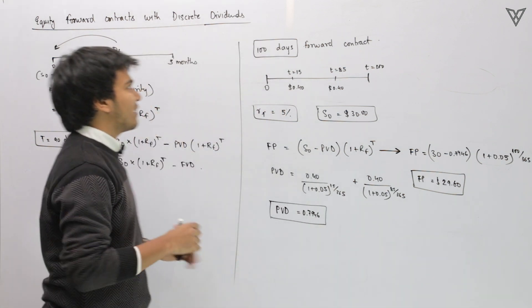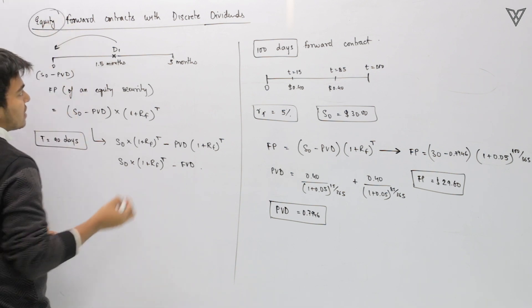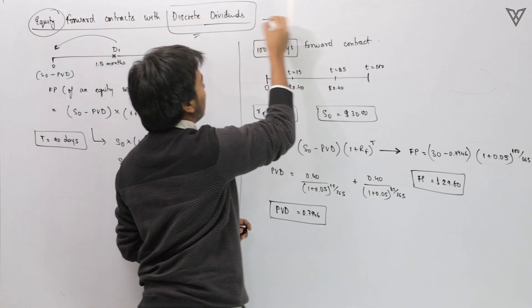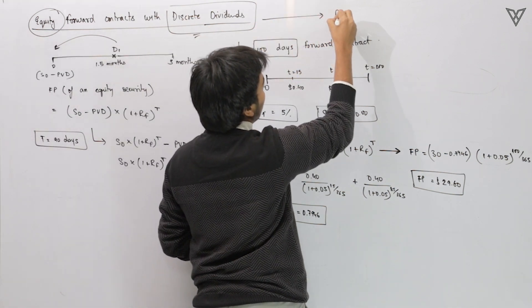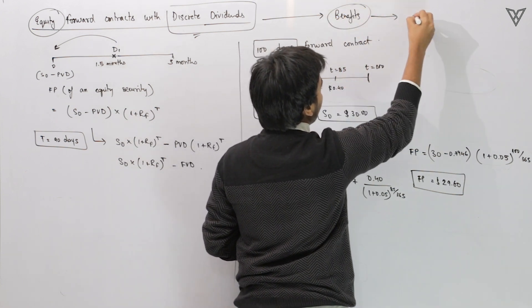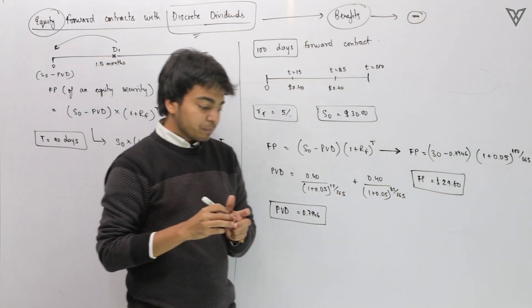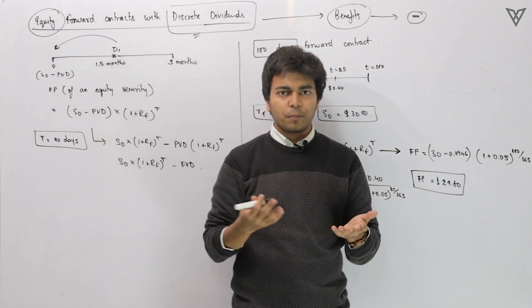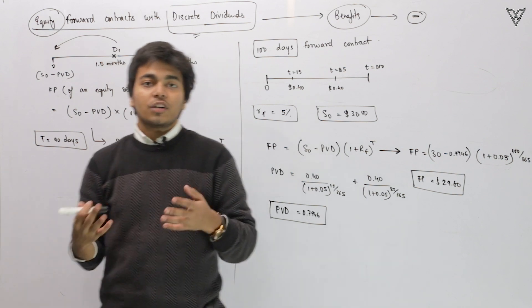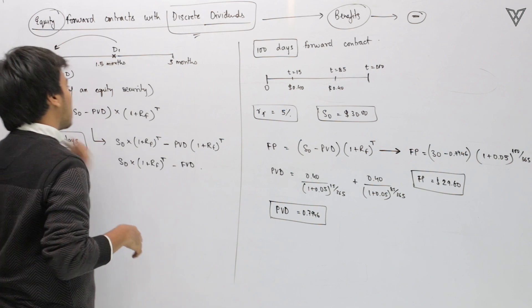I am going to take an example of an equity forward contract. In that equity forward contract we are going to discuss discrete dividends. Since we are going to discuss discrete dividends, these are nothing but benefits, and since there are benefits we are going to subtract them. The forward price is calculated using the spot price — we add the costs and we subtract the benefits. Dividends are nothing but benefits involved with the asset class.